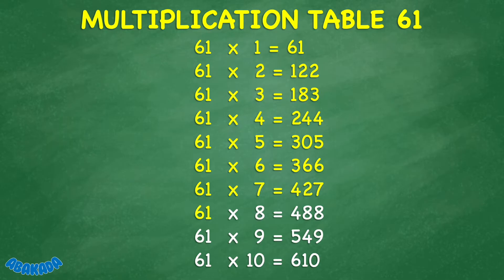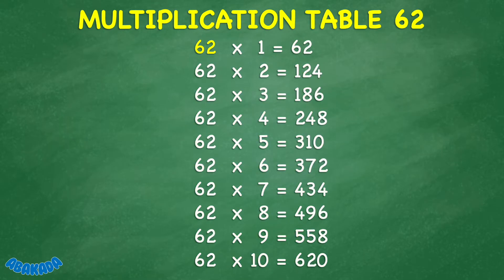61 times 8 equals 488. 61 times 9 equals 549. 61 times 10 equals 610. 62 times 1 equals 62.